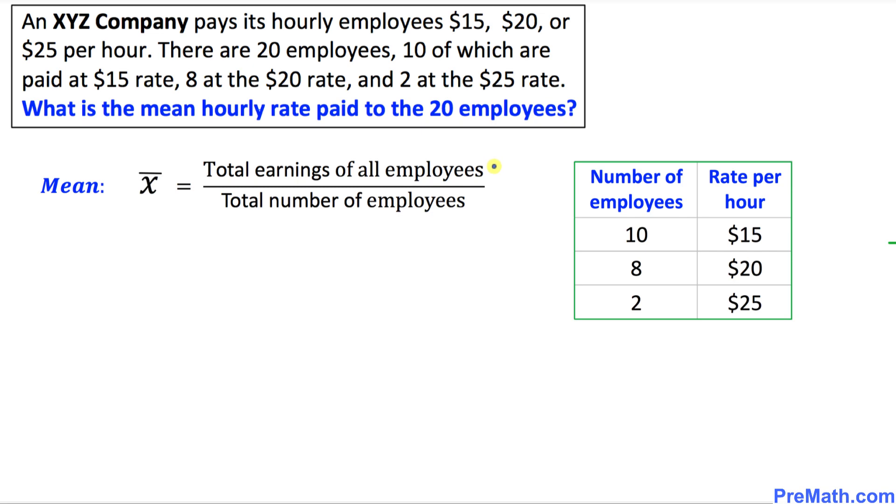The very first thing we are going to do is calculate the total earning of all employees. This is the way we're going to do it: we multiply these numbers. 10 times 15, that is going to give us 150.